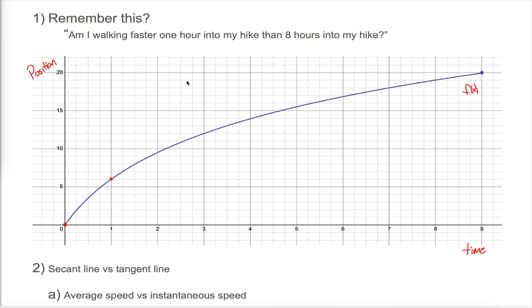We were able to intuitively understand that the answer is yes — I am walking faster 1 hour into my hike than 8 hours into my hike. The graph is getting less and less steep as I travel to the right, which essentially means I'm slowing down. During the first hour from time 0 to time 1, I go from position 0 all the way to position 6 — I travel 6 whole miles.